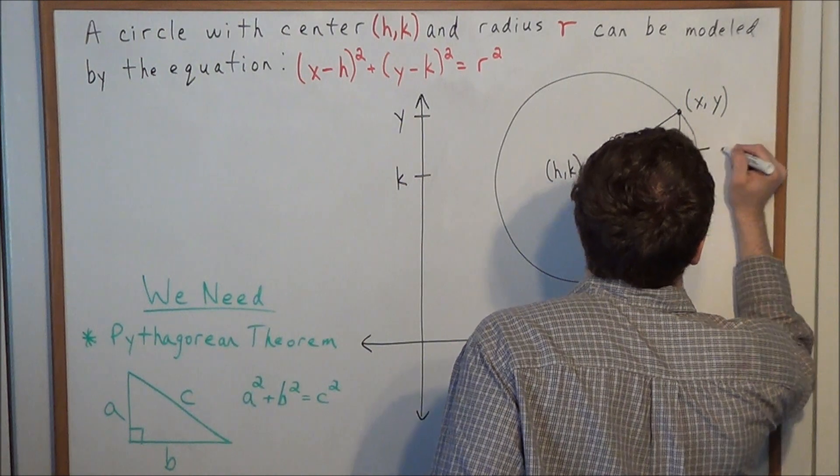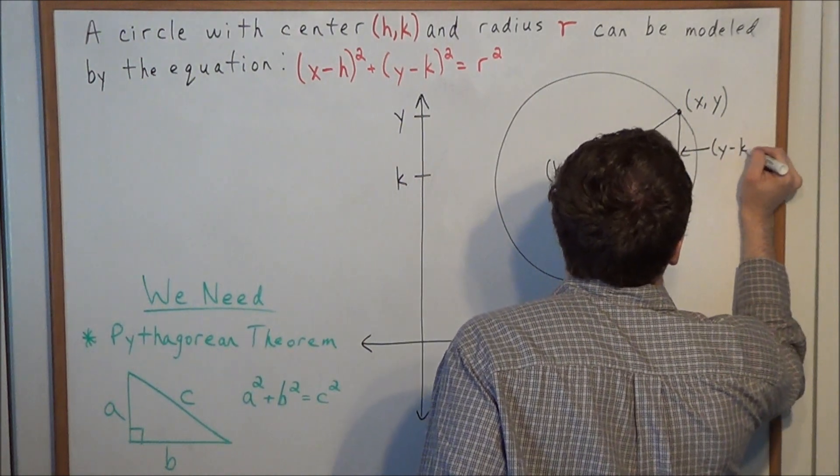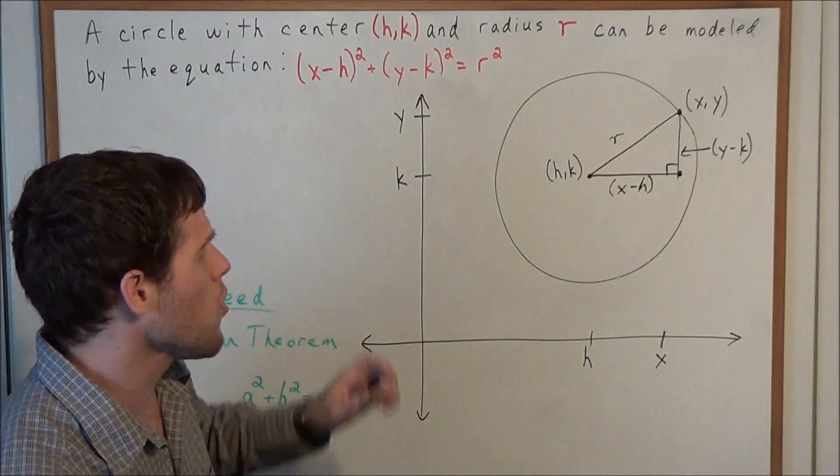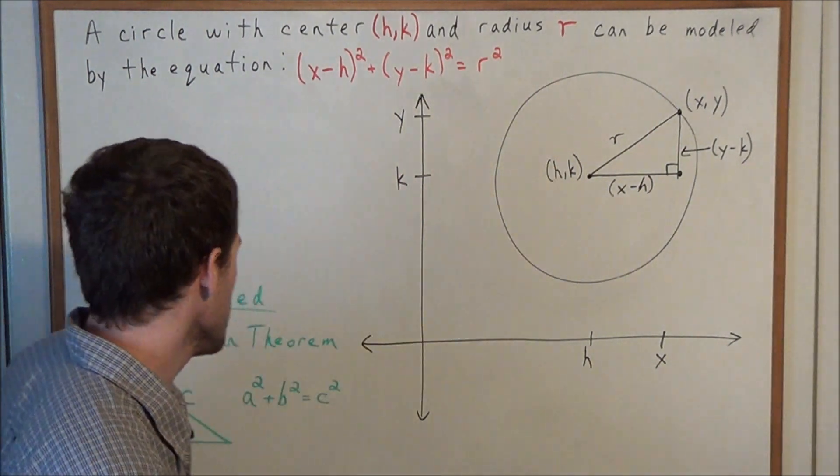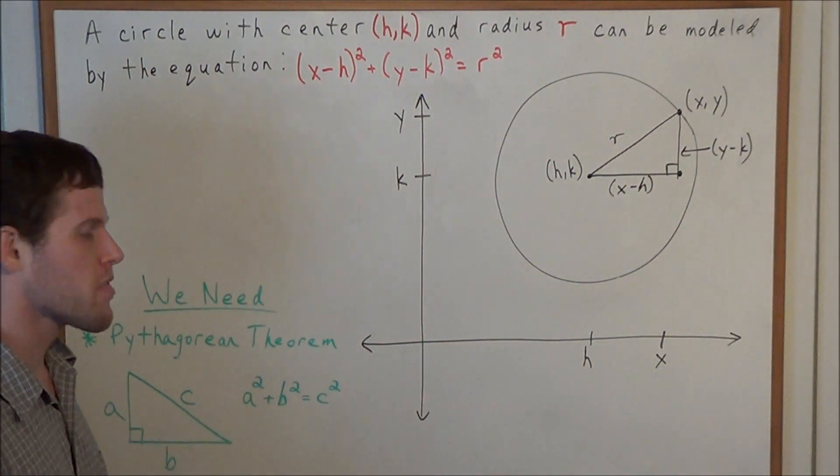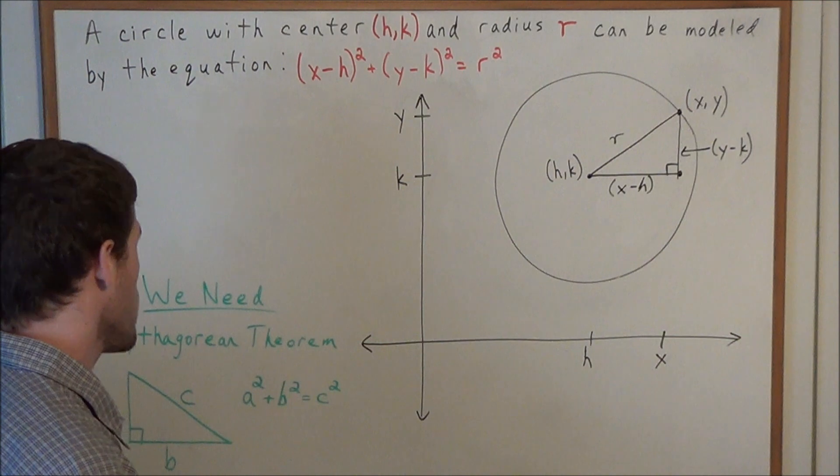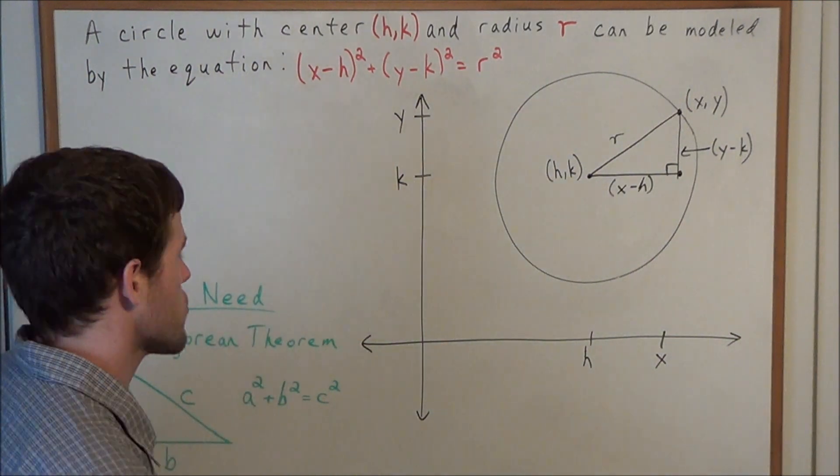So now we have the dimensions. We have all three sides of this right triangle. So now we could use the Pythagorean theorem to set up an equation relating the three sides of this right triangle.